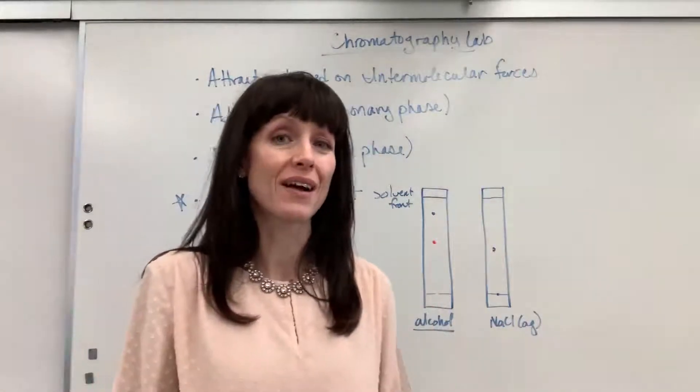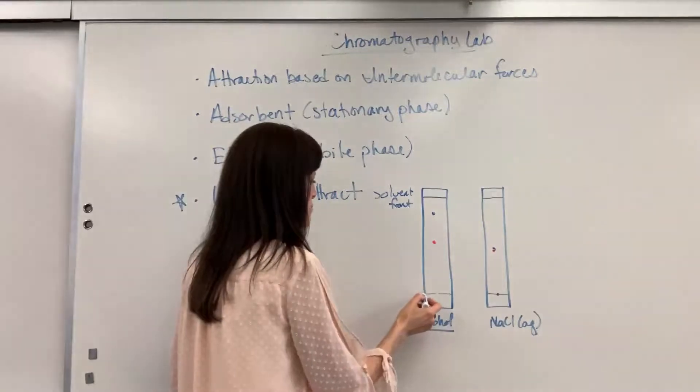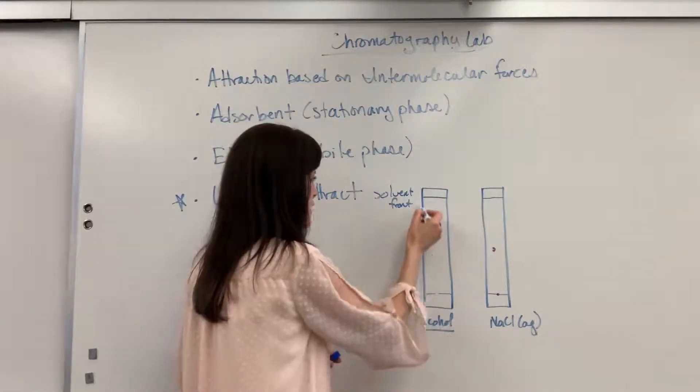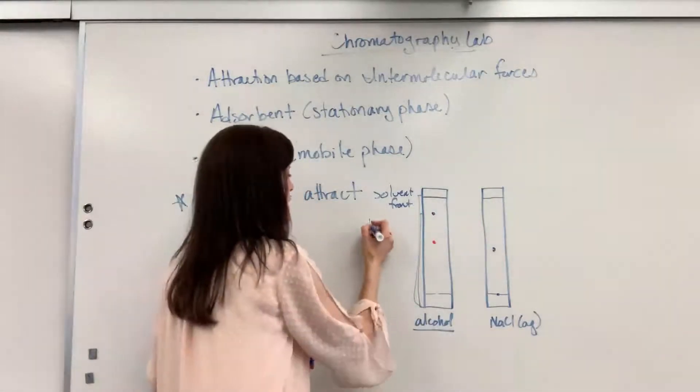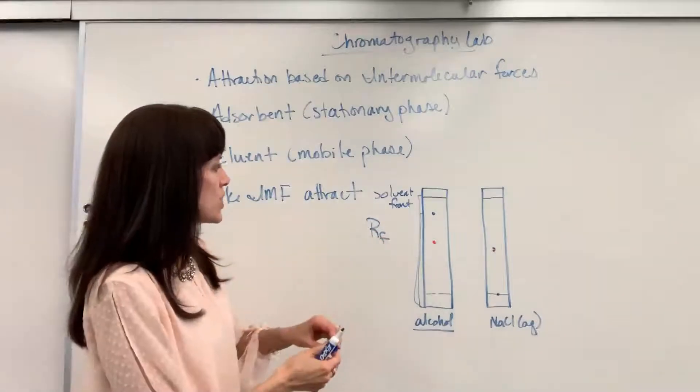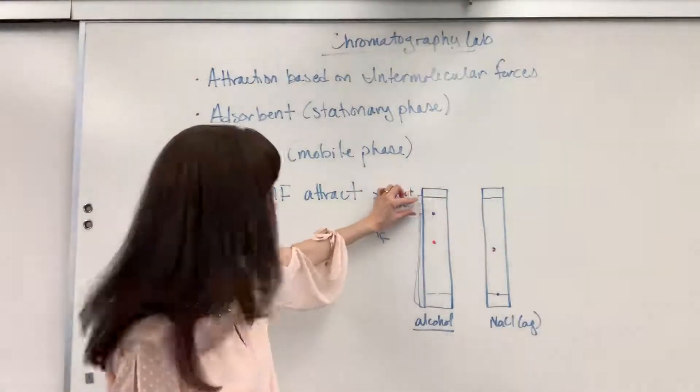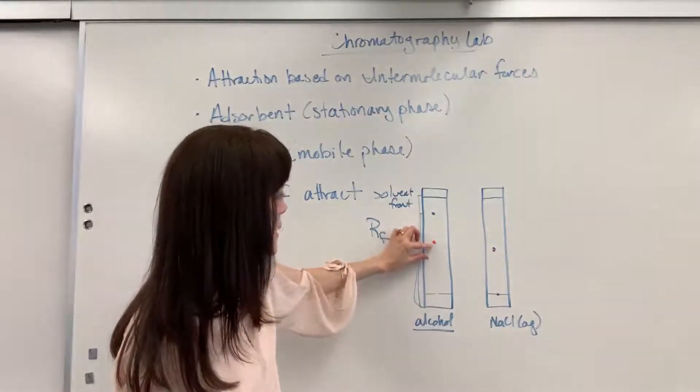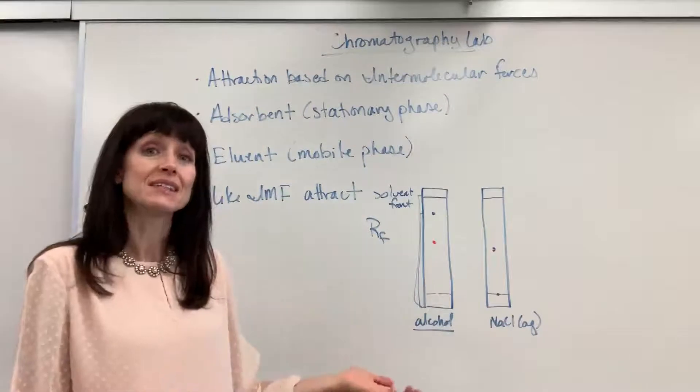We can actually do a calculation from this. You can measure the distance of the solvent front compared to the distance of how far the dye went, and that is called your RF factor. It gives you a percentage. Well, it looks like that this traveled about 85% of the way, where this one only traveled about 60% of the way. And so that gives us an idea.